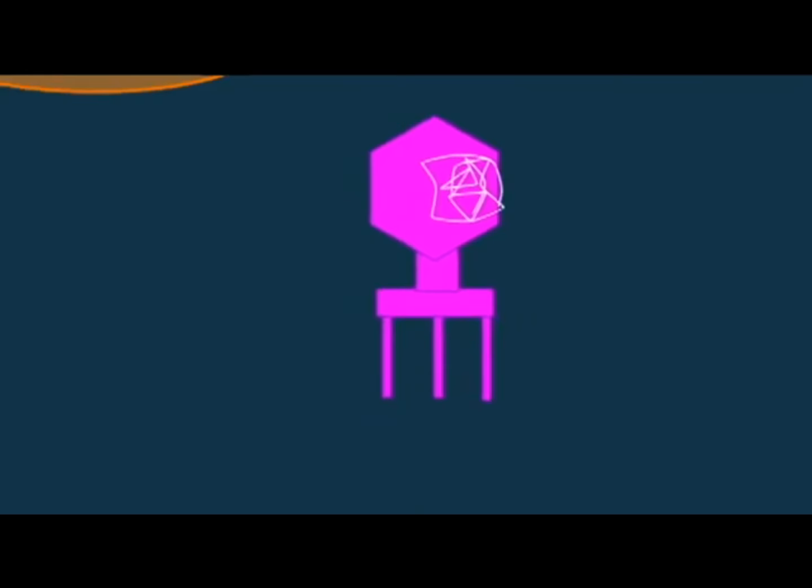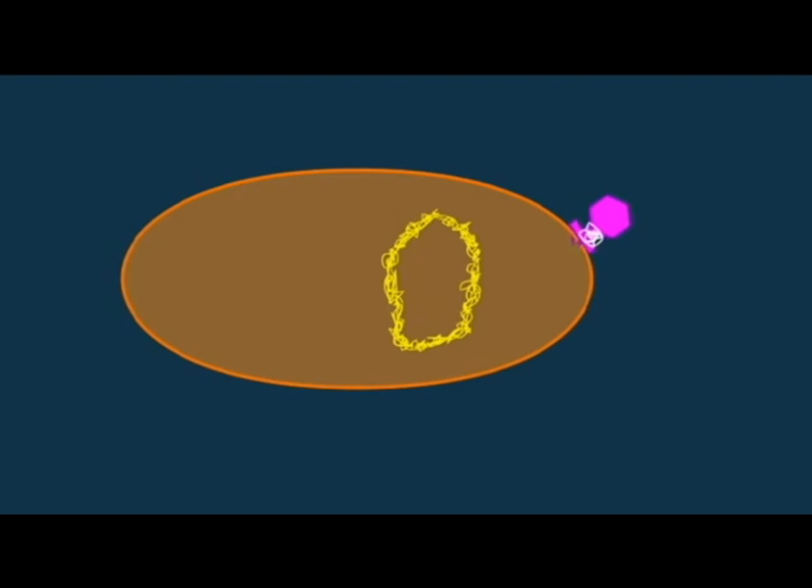But Hershey and Chase demonstrated that it was DNA and not protein which was the genetic code, as they experimented with viruses which infect bacteria and took advantage of the fact that DNA has phosphorus while protein does not, and protein has sulfur while DNA does not, and so radioactive labels of phosphorus or sulfur could trace these two molecules.